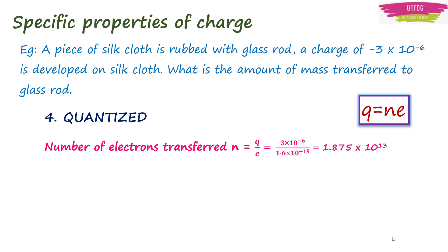Now substituting the values of q, which is given as 3 × 10^-6, upon the value of electronic charge, which is 1.6 × 10^-19. Once we divide, we get the number of electrons which will be equal to 1.875 × 10^13.